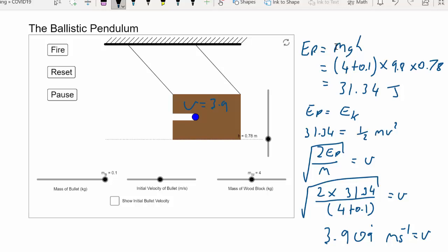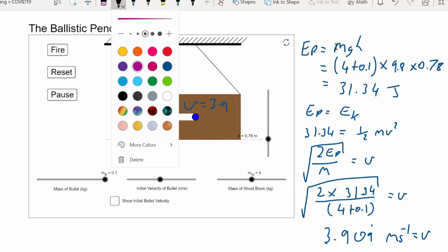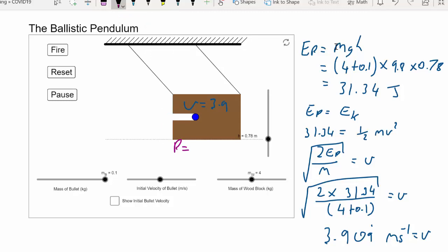And so if I want to work out how much momentum does this block have, well, momentum is going to be mass times velocity. What's the mass of this whole thing? Well, it's going to be 4 plus 0.1.